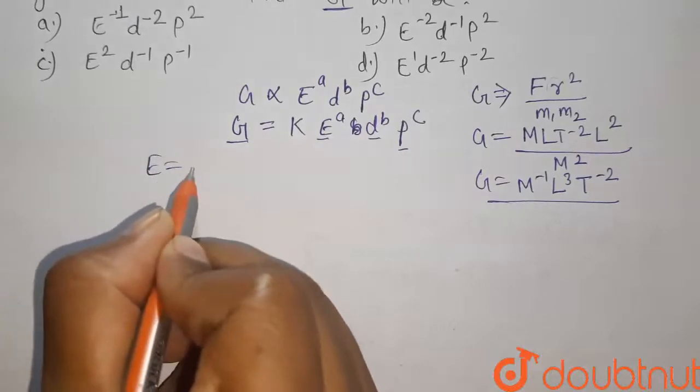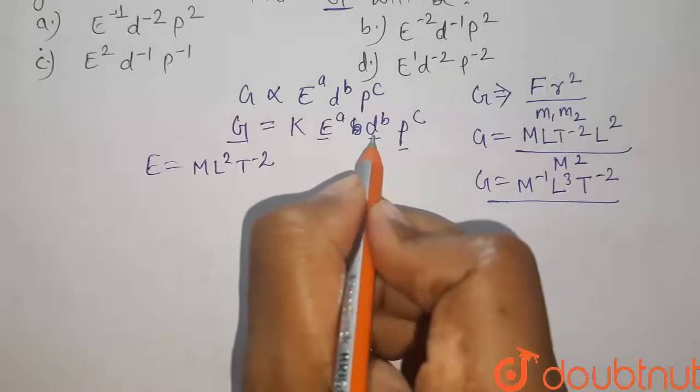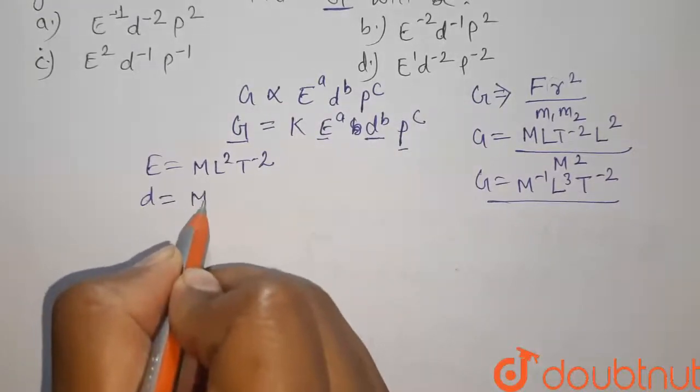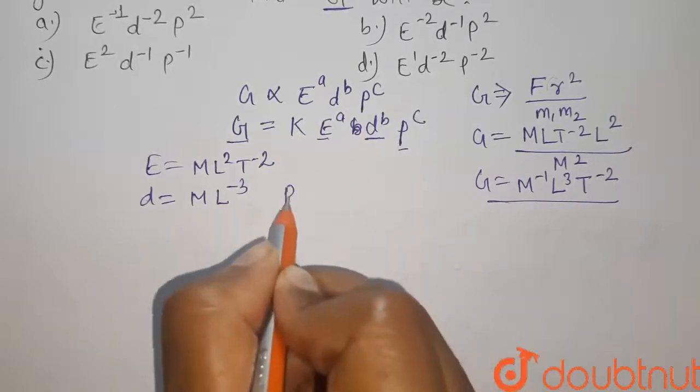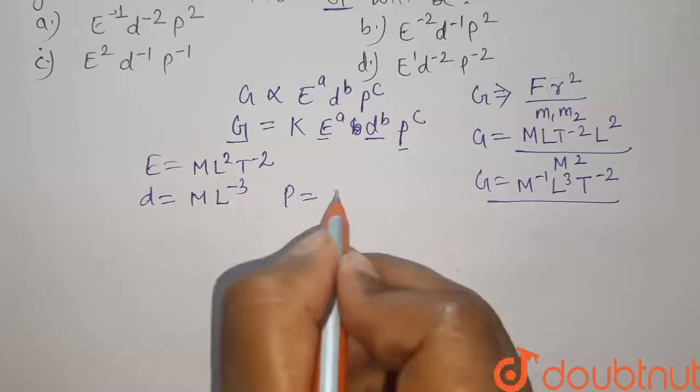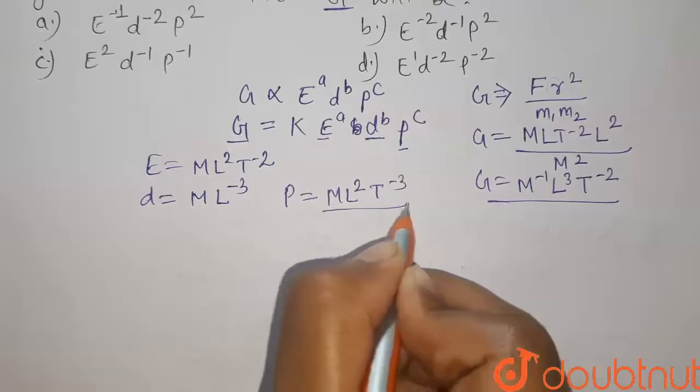Energy has the dimension of ML2 T minus 2. D is the density. Density has the dimension of ML minus 3. And P is the power. Power is given by energy per unit time, so it has the dimension of ML2 T minus 3. And K is a dimensionless constant.